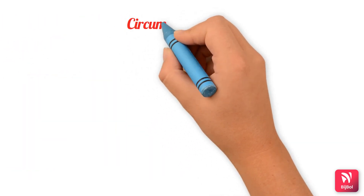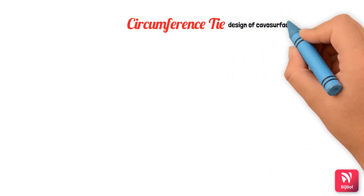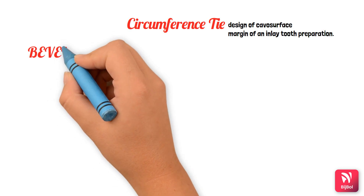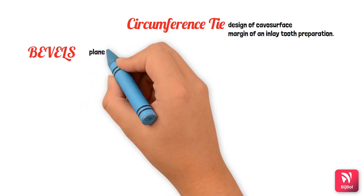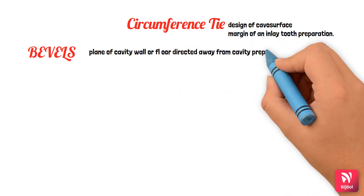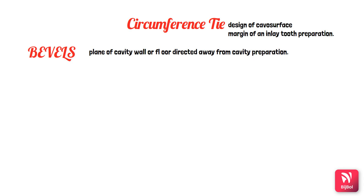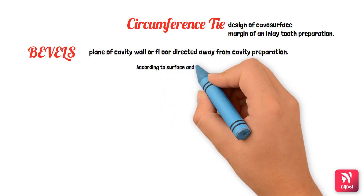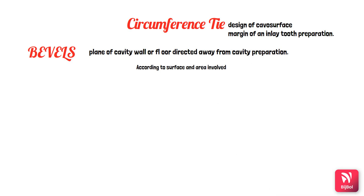Now we'll see circumferential ties, which refers to the design of the cavosurface margin of an inlay cavity preparation. It is of two types: bevel and flare. A bevel refers to the plane of the cavity wall or floor which is directed away from the cavity preparation. Bevels are usually placed on the occlusal and gingival cavosurface margins of the cavity preparation. According to the shape and extent of tissue involvement, bevels are of six types.